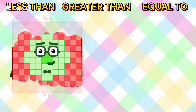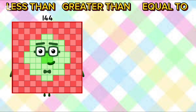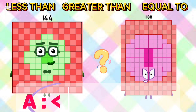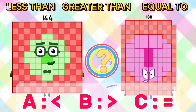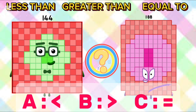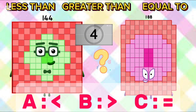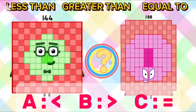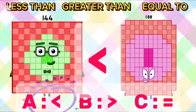144 and 188. What will come? A: less than, B: greater than, C: equal to. The answer is less than. 144 is less than 188.